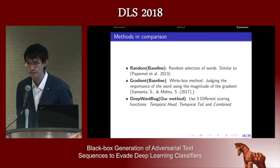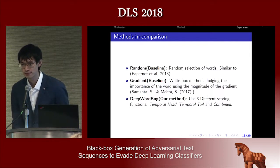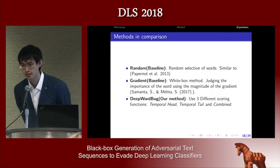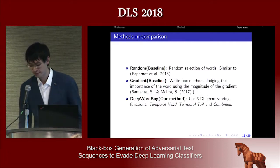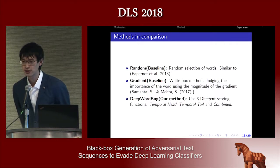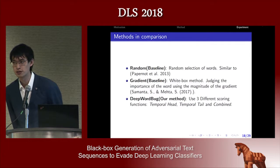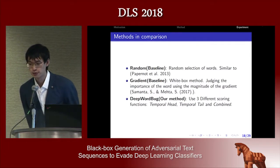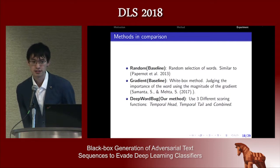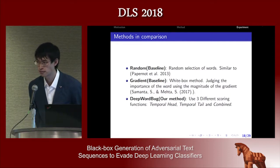A similar approach was adopted by spammers — misspelling words to bypass filters — and hashing improved results there. How robust is your method if someone uses text hashing to build a linear classifier? It generally depends on the developer of the machine learning model. If they use a similar architecture, our method would still be able to attack the model.